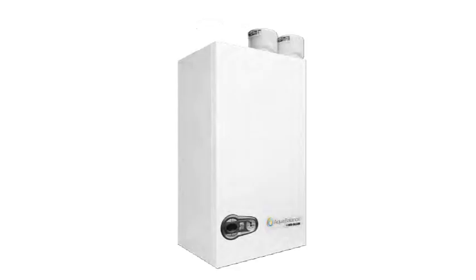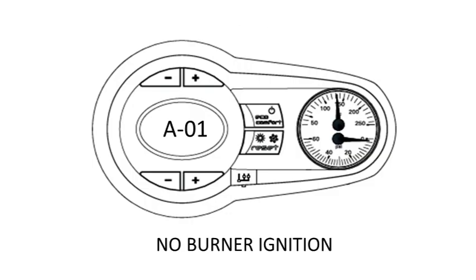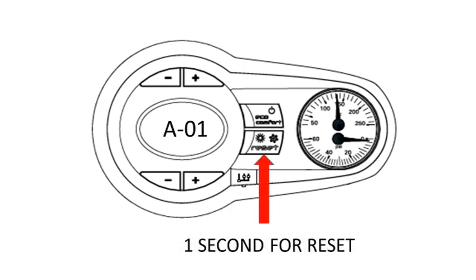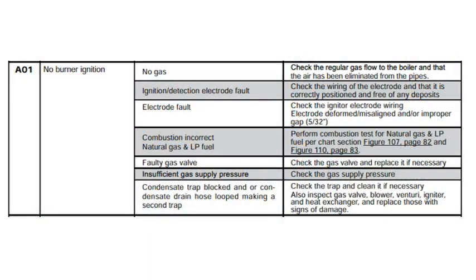For our AquaBalance boiler, the current fault will be listed on the screen either as a lockout code or a blocking code. The manual lockout codes need to be manually reset after the condition has been corrected by pressing the reset button for one second. The blocking codes will reset automatically when the fault is corrected. Use the manual to determine what the fault code means and how to correct it.